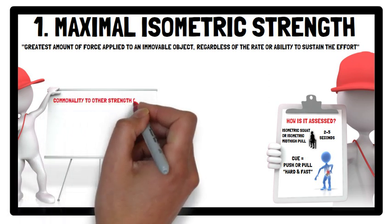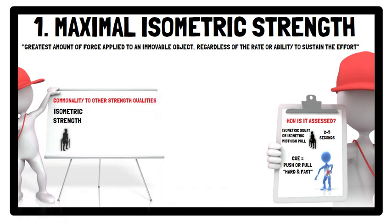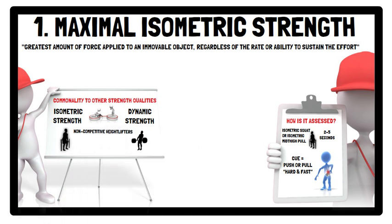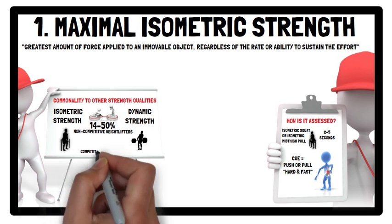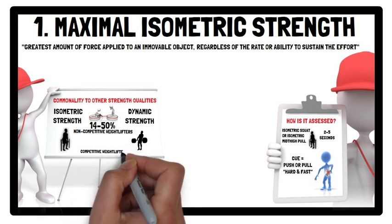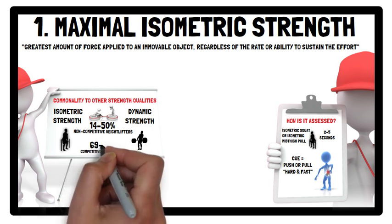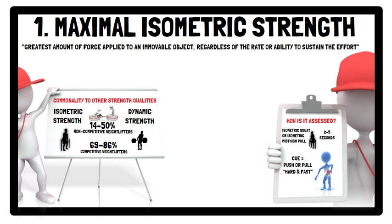When the isometric position — for example, isometric squat or mid-thigh pull — is replicated dynamically under maximal loads, such as a one-repetition maximum back squat or power clean, the commonality in non-competitive weightlifters ranges between 14–50%. In competitive weightlifters, heavy training lifts and their isometric mid-thigh pull peak force tend to have a higher commonality, ranging between 69–86%. In these exceptional cases, maximal isometric and heavy dynamic strength can be considered a very similar quality.